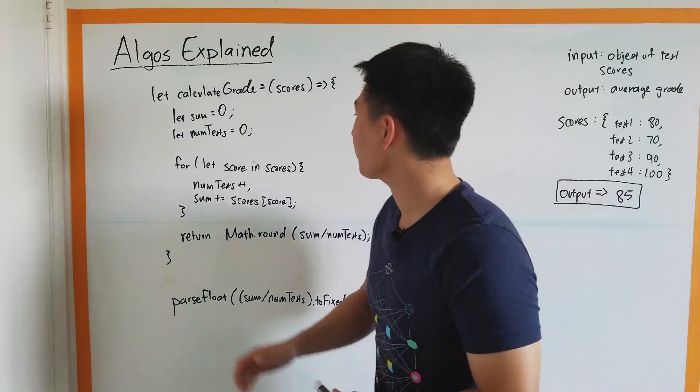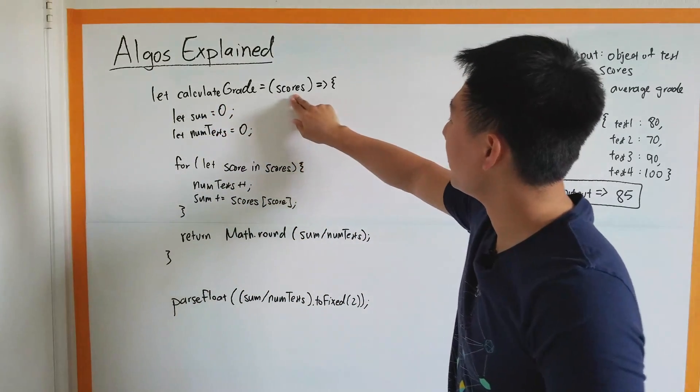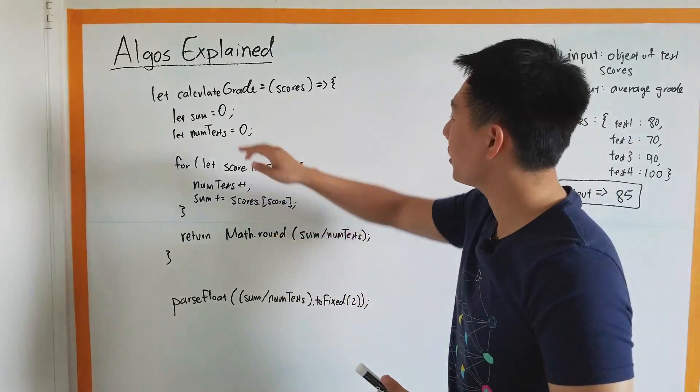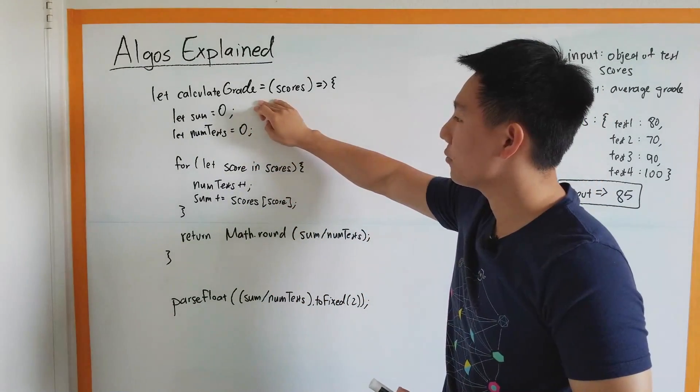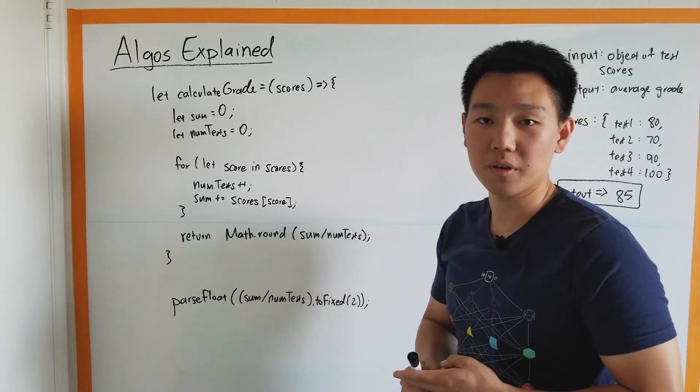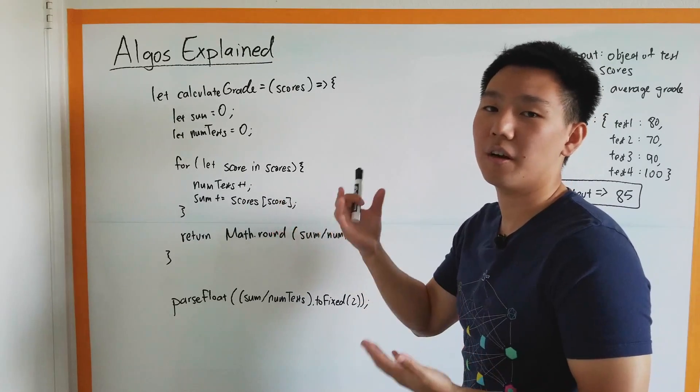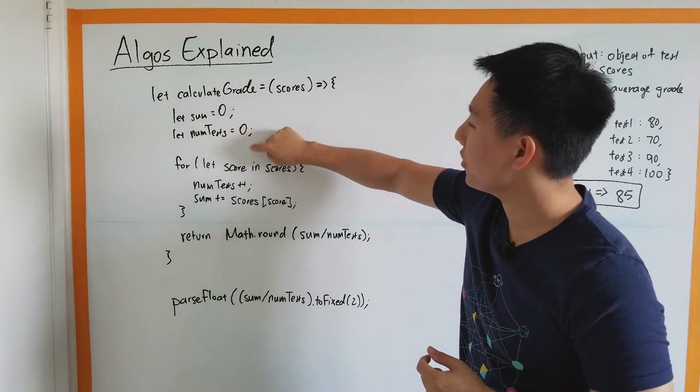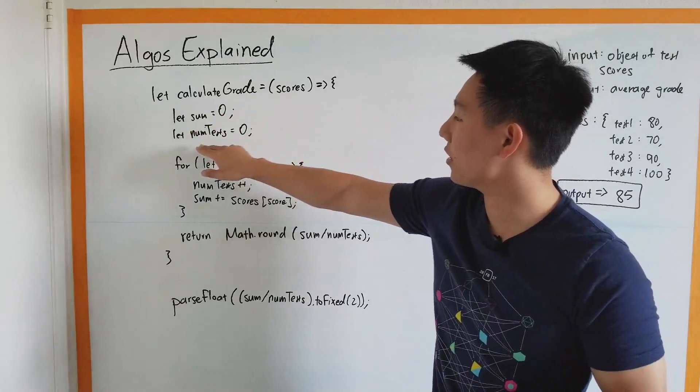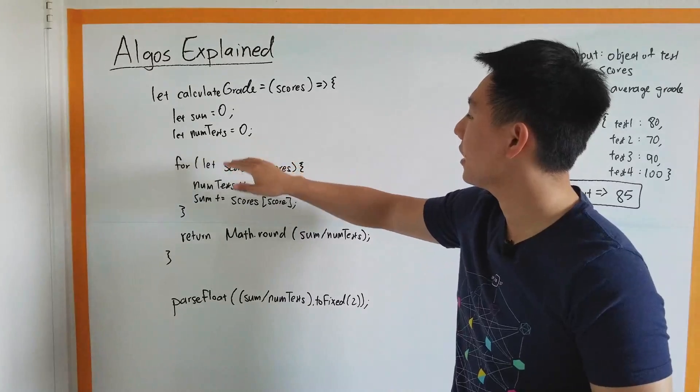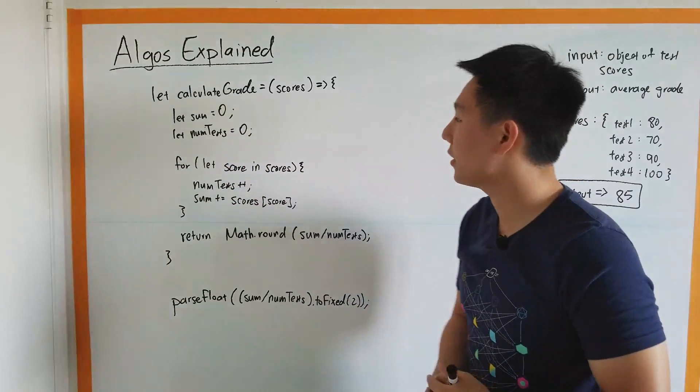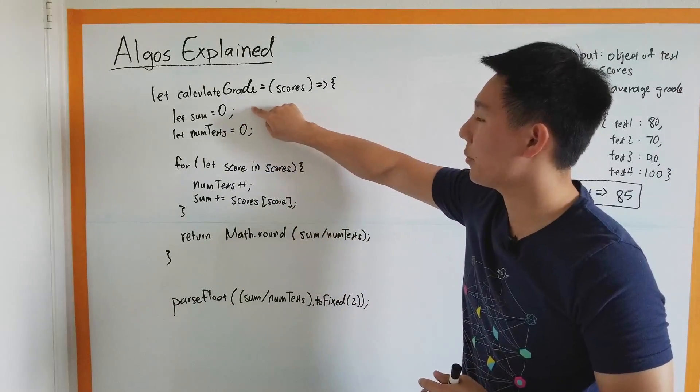If we go over to our code here, we can see that we're taking scores as our input. This is an object, and we know for sure right now that we're going to have to later calculate the average, which means we're going to have to get a sum, and we're going to have a number. Pretty much what we're going to have to divide by, the divisor. We're going to create those variables at the very top here. We're going to call the sum sum, and we're going to call the number of tests numTest. Right now, we start off at zero.